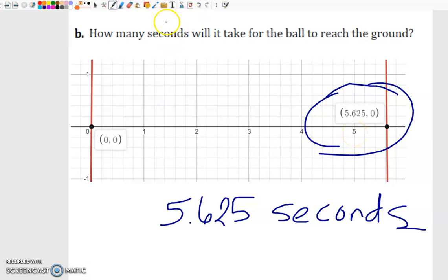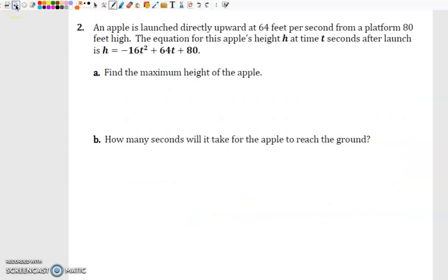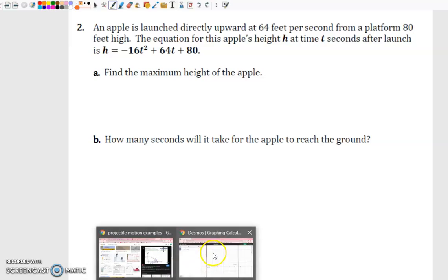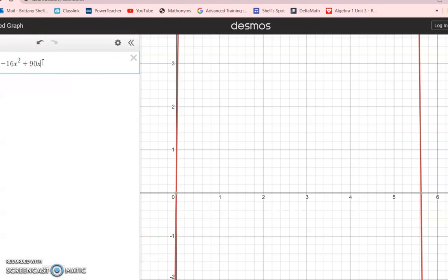Alright, so now we go over to number two. Number two says an apple is launched directly upward at 64 feet per second from a platform 80 feet high. The equation for this apple's height h at time t seconds after launch is h equals negative 16t squared plus 64t plus 80. We're going to find those same two things that we found in the last equation. We're going to find the maximum height of the apple and we're also going to find the number of seconds it takes for the apple to reach the ground.